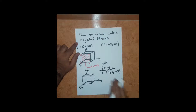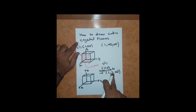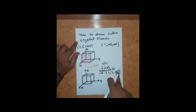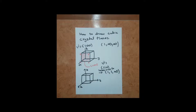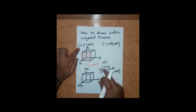So the intercepts are: 1 at the x-axis, 1 at the y-axis, and infinity at the z-axis. Since all values here are positive, let's start identifying the positive x-axis directions.